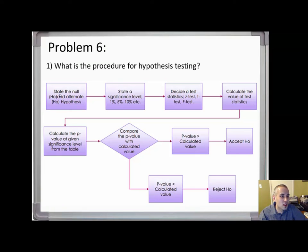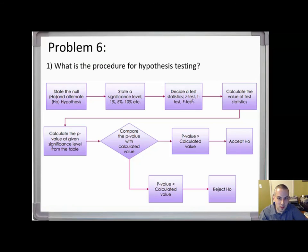Quickly: state the null and alternate hypothesis, state a significance level (also called alpha), decide on a test statistic — z-test, t-test, or f-test — then calculate the value of the statistic. From that value we calculate a p-value, compare the p-value with the calculated value, and then either accept or reject the null hypothesis.